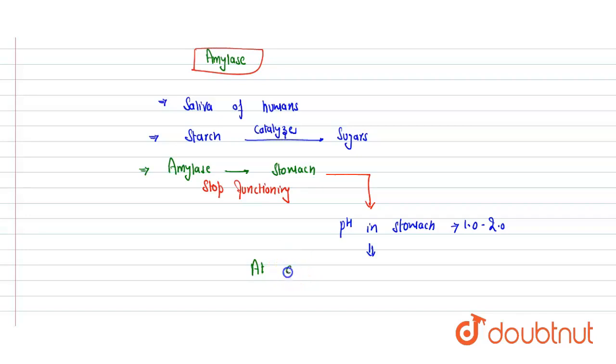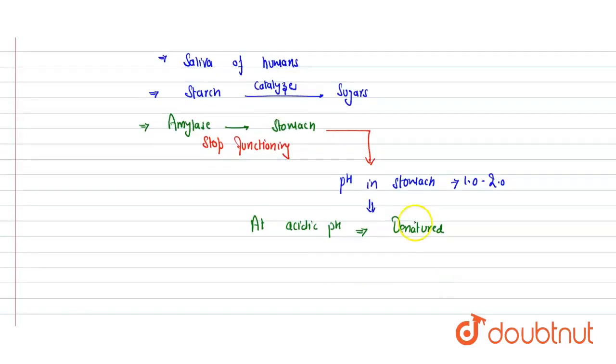gets denatured. And denaturation results in the loss of enzymatic activity of the protein—loss of enzymatic activity.